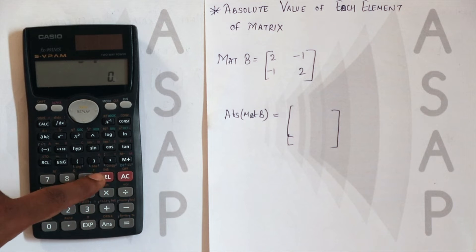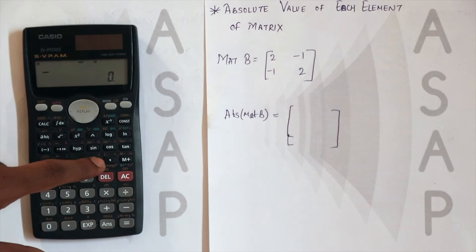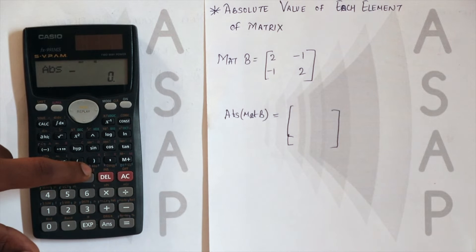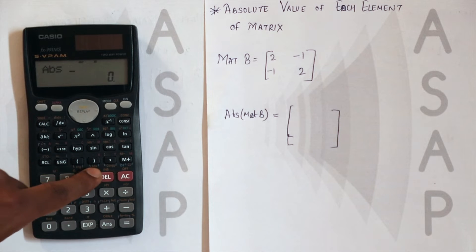Now if you notice here, we have this option where ABS is written. When we press shift this option, we have the closing round bracket sign on the top and below that ABS, that is absolute, is written.